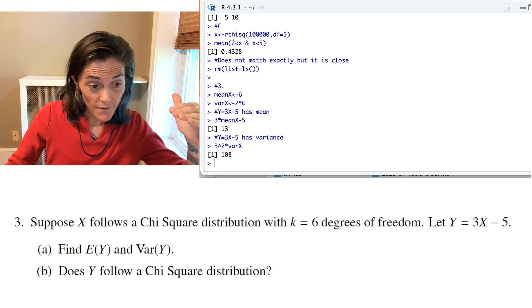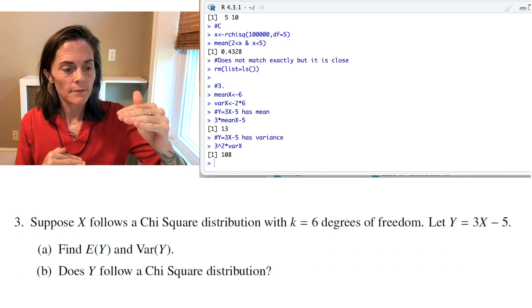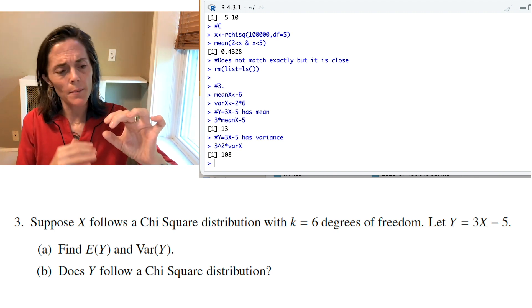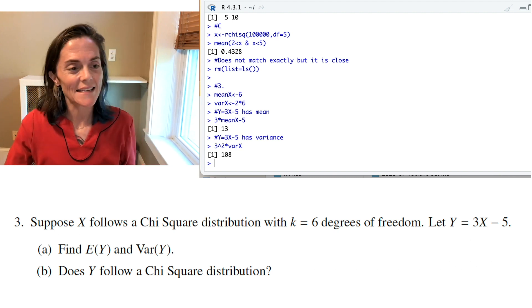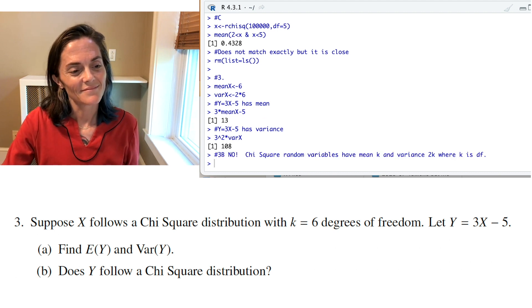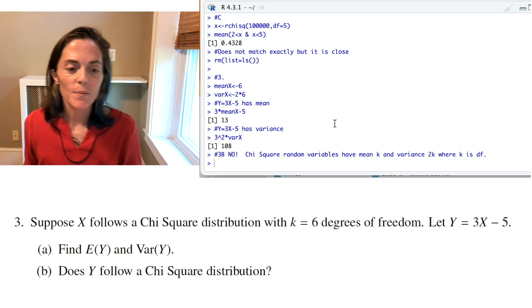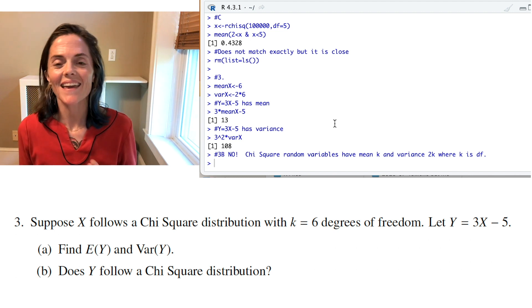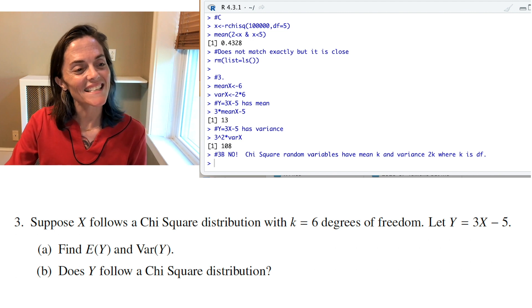So, look, I have a mean 13 and a variance 108. If this was chi-square, well, it would have to have 13 degrees of freedom. But then, the variance would be 26, which is not 108. So, the answer, right here, no. Chi-square random variables have to have mean k and variance 2k when you have k degrees of freedom. I like that question.